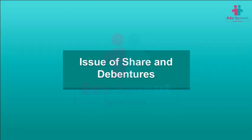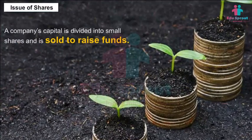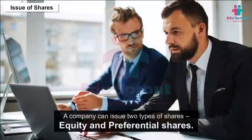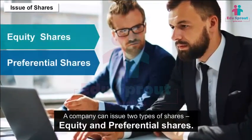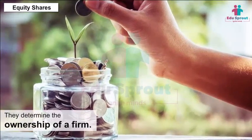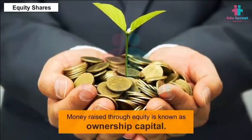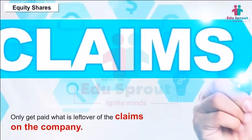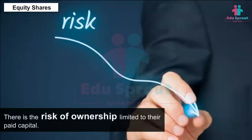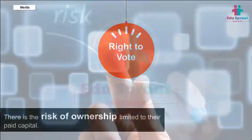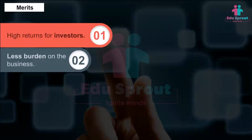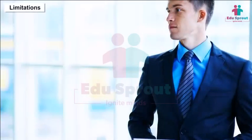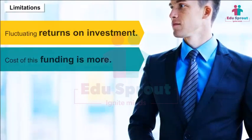Issue of Shares: A company's capital is divided into small shares sold to raise funds — this is called share capital. A company can issue two types of shares: equity and preference shares. Equity shares determine the ownership of a firm; money raised through equity is known as ownership capital. Equity shareholders are residual owners — they only get paid what is left over after all claims. Their risk of ownership is limited to their paid capital, and they have the right to vote. Merits: high returns for investors, less burden on the business, assets are free to mortgage, and democratic control of management. Limitations: fluctuating returns on investment, higher cost of funding, dilutes voting powers, and formalities and procedures for issuing shares.